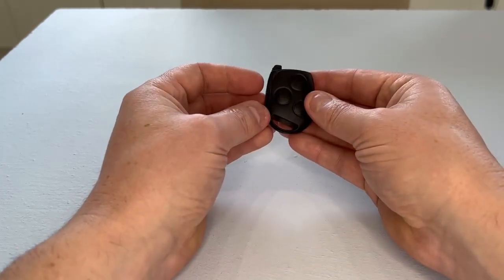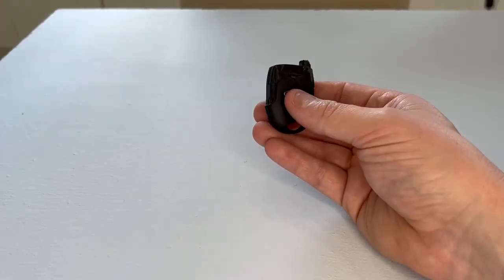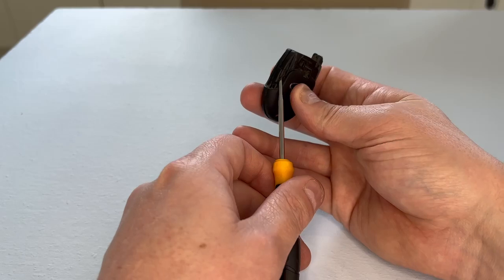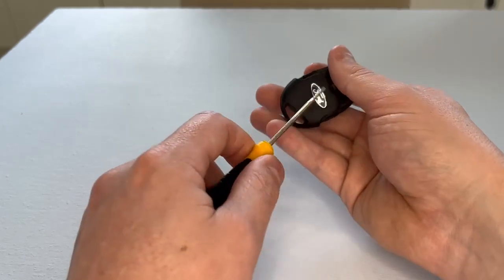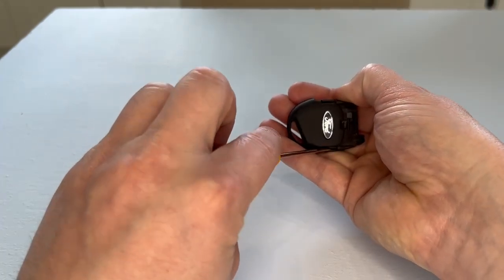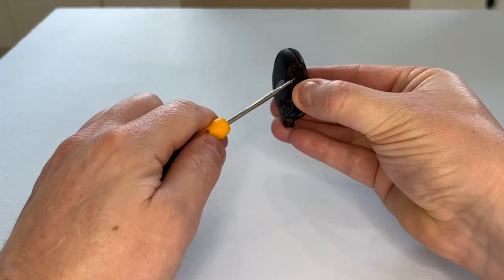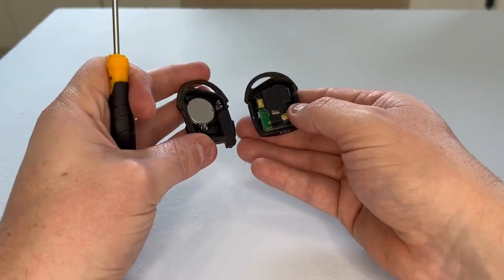Now what we need to do is split this key fob in half. We do that by releasing the little catch here, and then again on this side, which releases the two halves of the case.